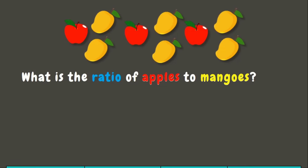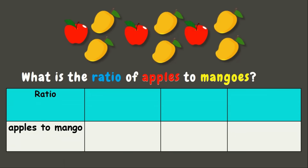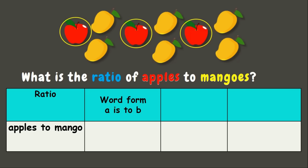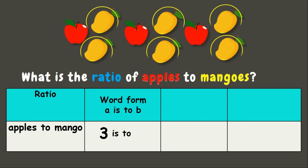There are three ways in writing a ratio. The first one is the word form, which is 'A is to B.' Here we are going to count the first item, which is apples — we have three apples, so we write three. Three is to the second item, which is mangoes — we have six mangoes. That makes three is to six.